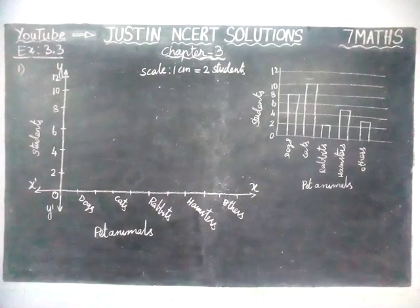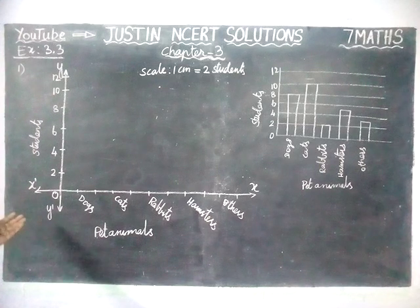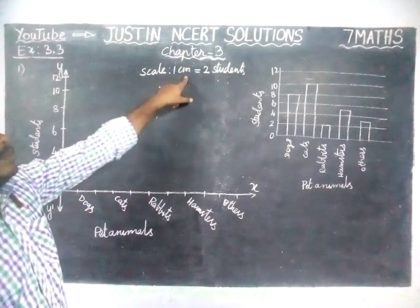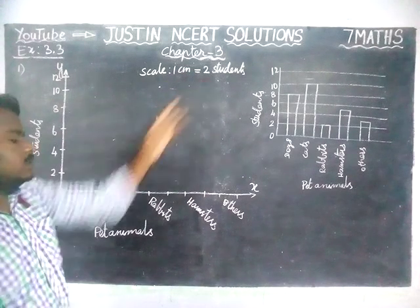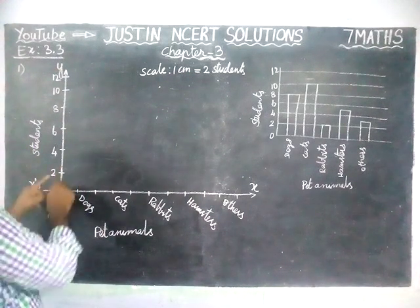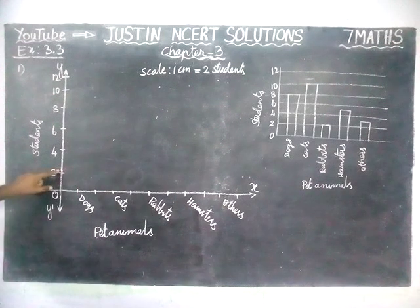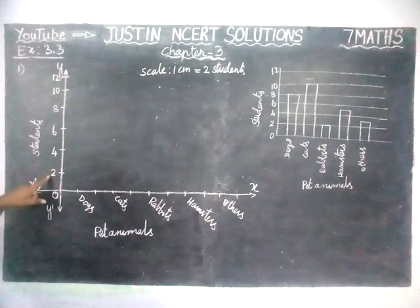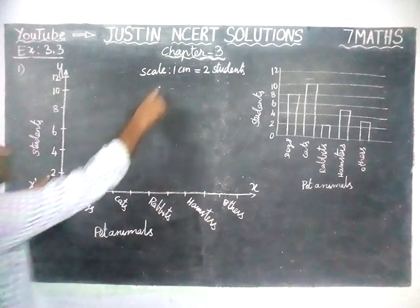The given information we are going to draw in this bar graph. In the bar graph, the scale is equal to 1 centimeter equal to 2 students, taken on the y-axis. Each centimeter is equal to 2 students. In the x-axis we have taken pet animals, and in the y-axis we have taken students.